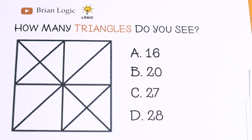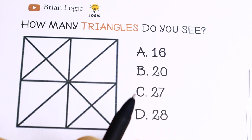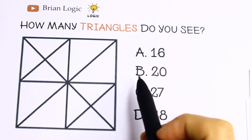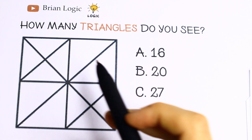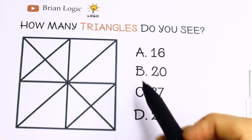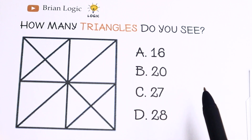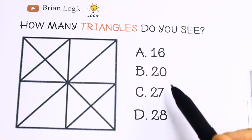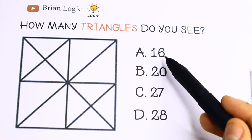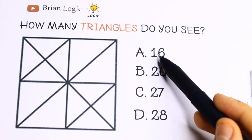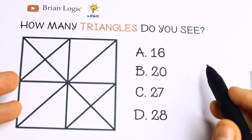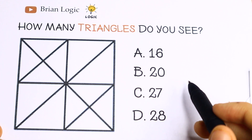Hello everyone, let's enhance our logic. In this video we are going to solve this interesting IQ question. So how many triangles do you see? We have a figure on the left and we have options A, B, C and D. We have a lot of triangles: 16, 20, 27 and 28 — and let's count how many triangles we will have.